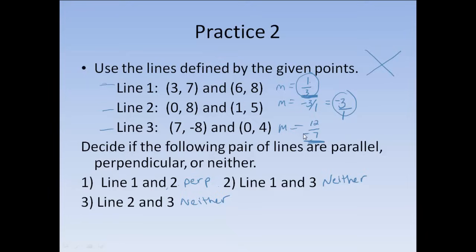Now, they are opposites. One is positive and one's negative. But, they aren't reciprocals. And, to be perpendicular, you have to be both opposite and a reciprocal. So, lines 1 and 3, they are neither. They're not parallel. They're not perpendicular. Lines 2 and 3, same type of thing going on. I have negative 3 over 1 compared to negative 12 sevenths. They're not identical. So, they're not parallel. And, they're not opposite reciprocals. They're not opposites or reciprocals. So, they would also be neither when you compare them to each other.